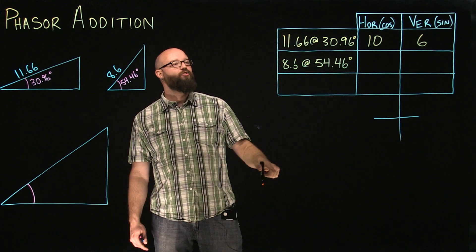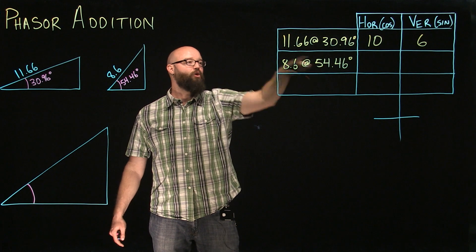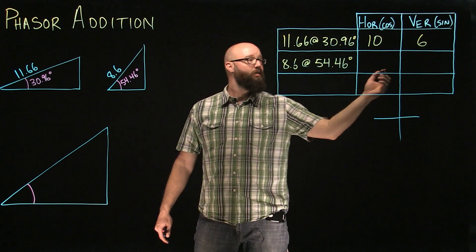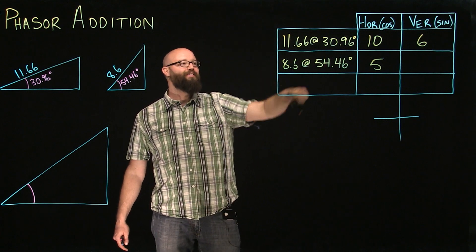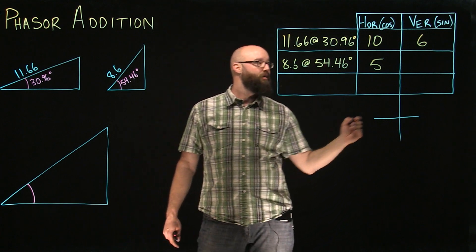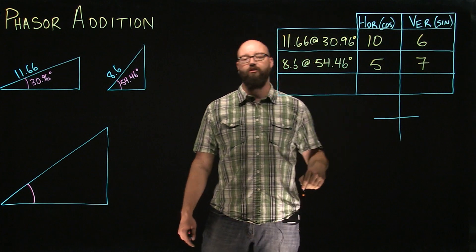Do the same thing for our second triangle. Hypotenuse times the cos of 54.46 gives us 5 as our horizontal, and 8.6 times the sine of 54.46 gives us 7 as our vertical.